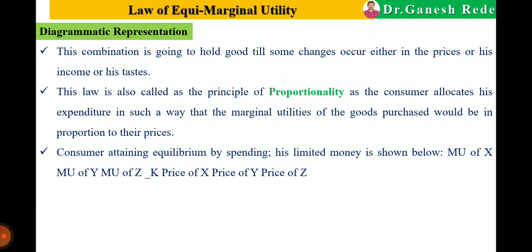Consumer equilibrium is achieved by spending limited money such that the marginal utility of X divided by price of X equals marginal utility of Y divided by price of Y equals marginal utility of Z divided by price of Z.